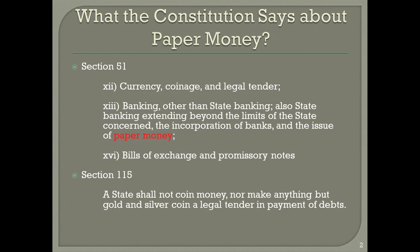And then subsection 16 covers bills of exchange and promissory notes. Taken from the fact that these instruments are noted separately from those referring to paper money, currency and legal tender, it would be fair to say that these are creatures altogether distinct and don't really play into this debate. Perhaps most damning for those advocating that the Constitution permits a fiat currency is section 115, which provides: a state shall not coin money nor make anything but gold and silver coin legal tender in the payment of debts. Based solely on the text of the Constitution, I would feel quite confident that I'd offered a convincing case that a fiat currency is unconstitutional.